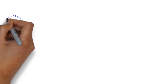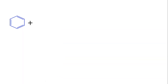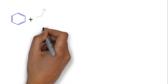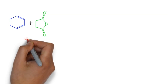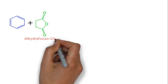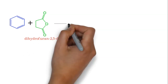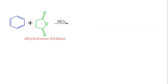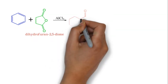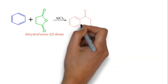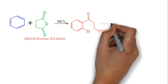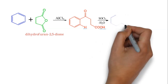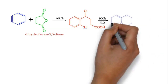Let us take benzene. Benzene reacts with dihydrofuran-2,5-dione, which on cyclization in the presence of AlCl3 gives an intermediate. In this step, removal of H2O — OH and H — in the presence of SOCl2, water is removed and further intramolecular cyclization gives tetralone.